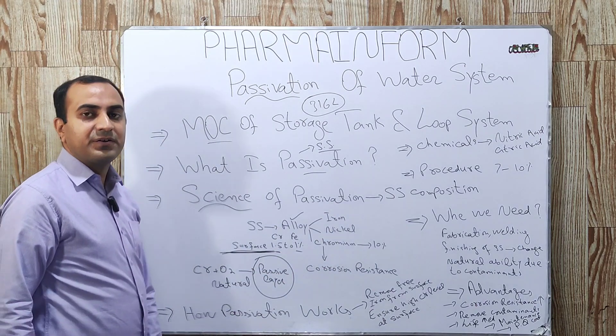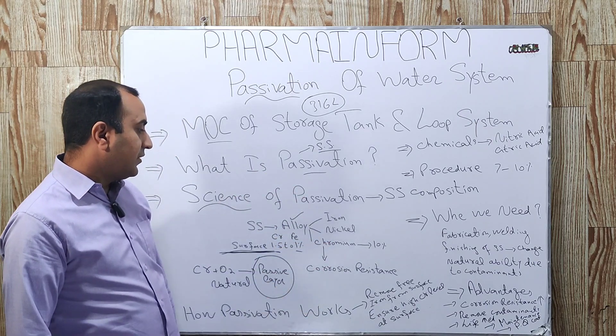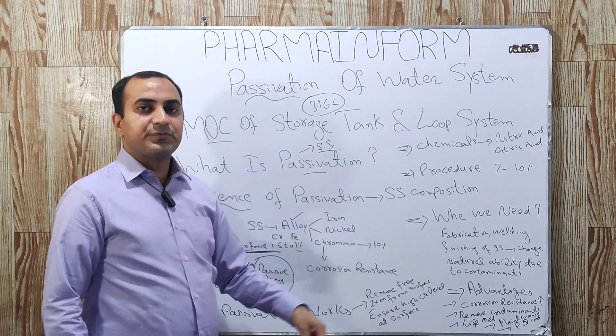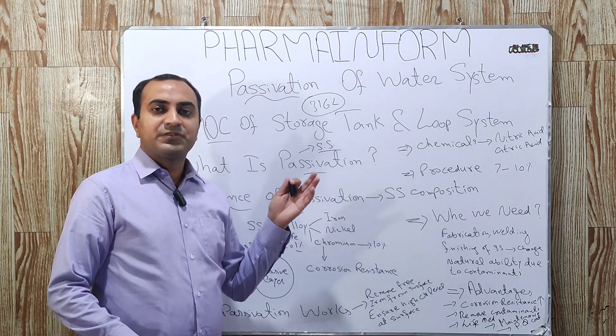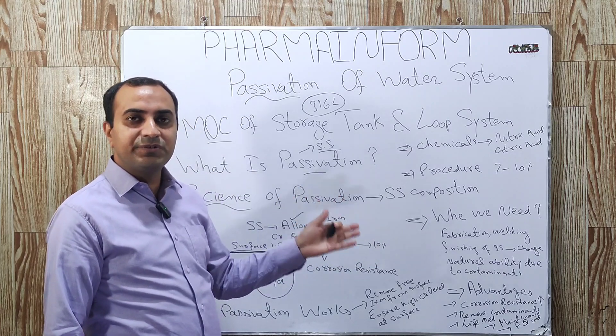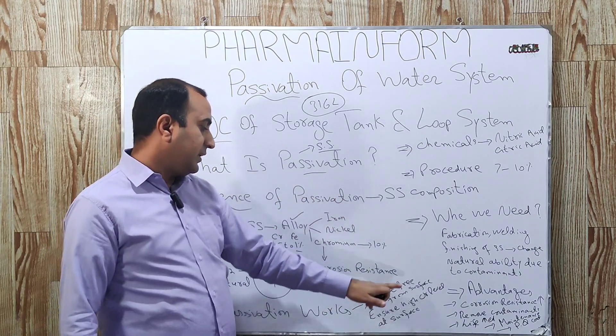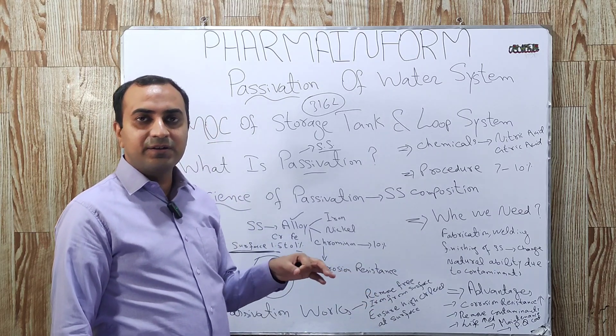How passivation works? Basically, passivation works by removing free iron from the surface. Means when we treat stainless steel with specially designed chemicals, the function of these chemicals or the process of passivation is to remove free iron from the surface.